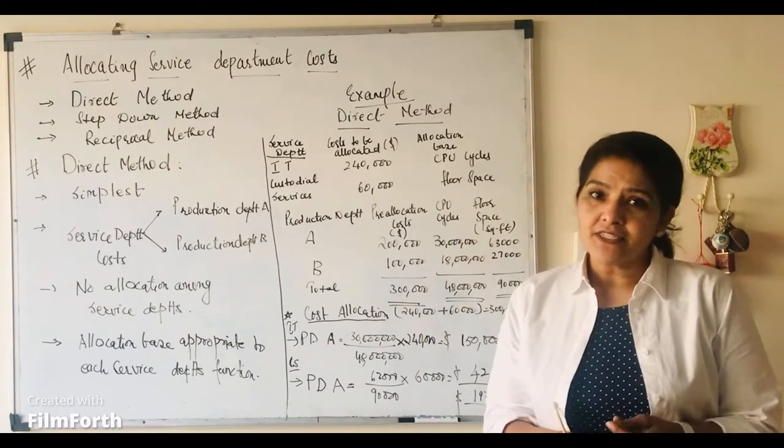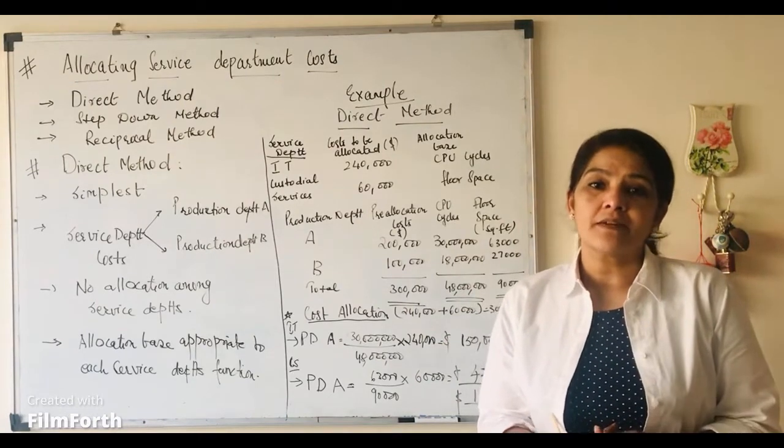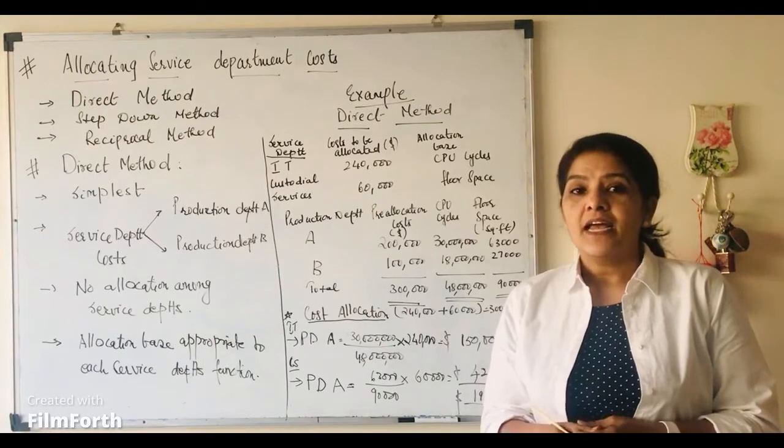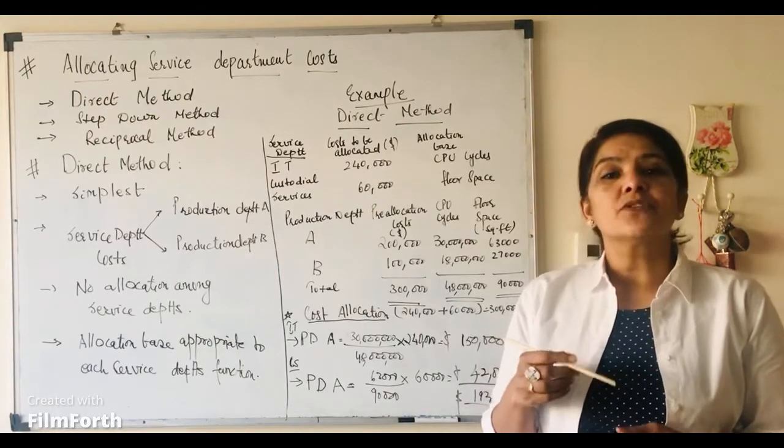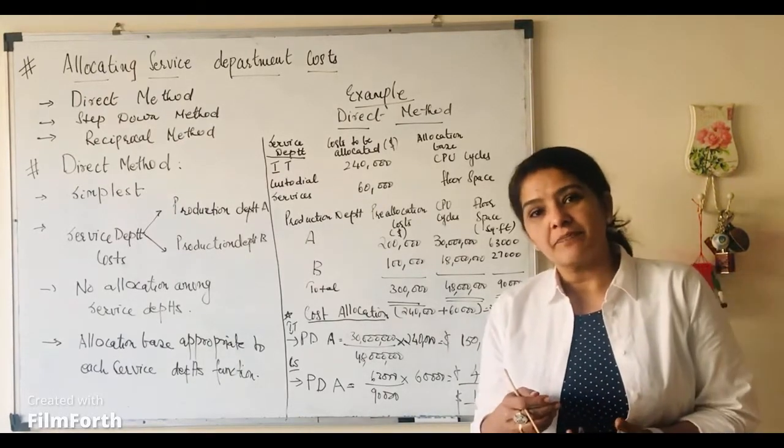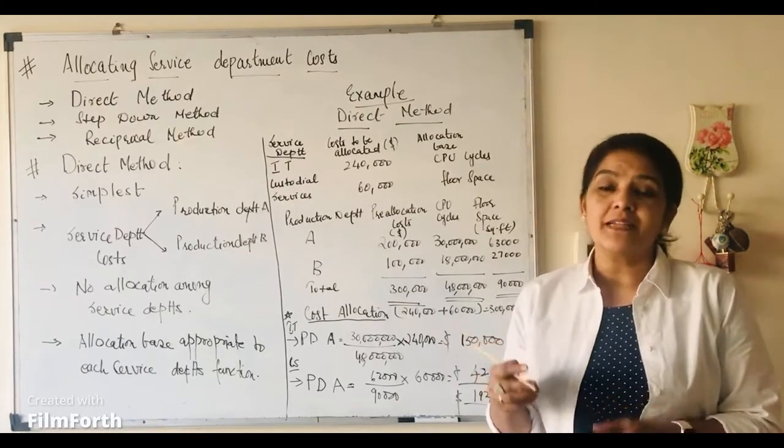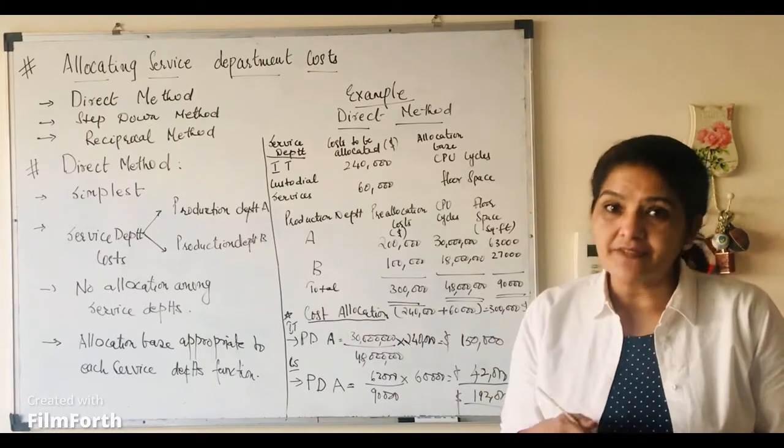Today we are going to do allocation of service department costs. We all know that service or the support department costs are considered to be overhead or indirect costs. As such, it is not feasible to trace it to cost objectives. Rather, it is allocated to operating departments that make use of these services.